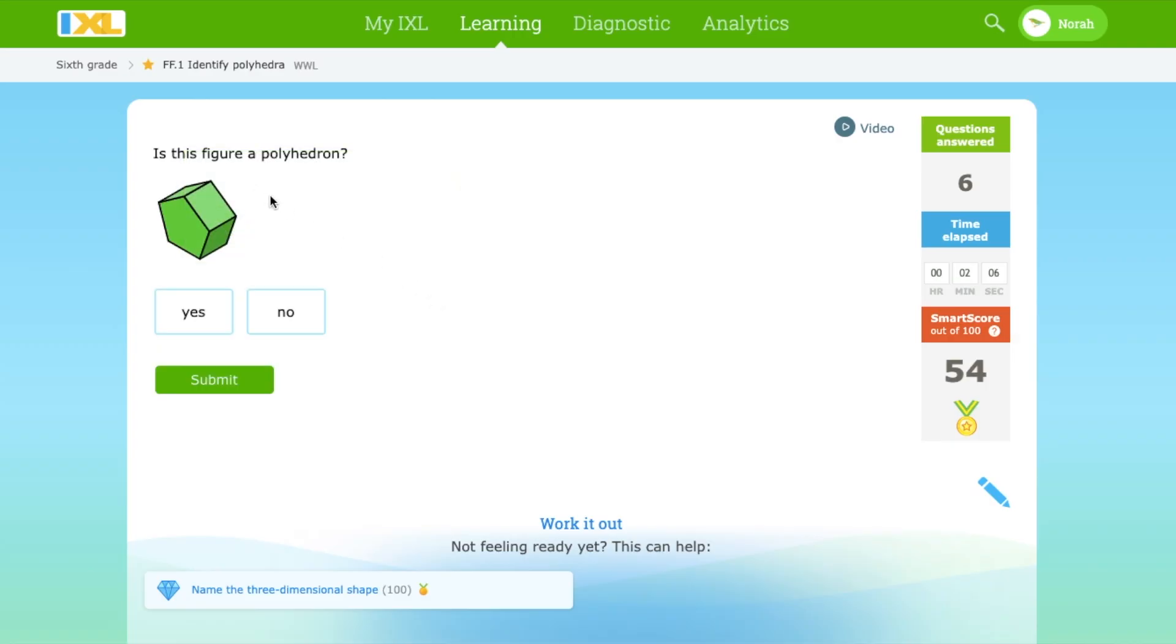Is this figure a polyhedron? Yes, again, because we can see all around, there's a face.